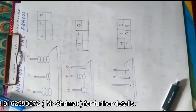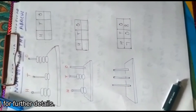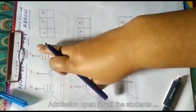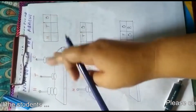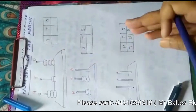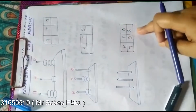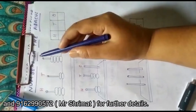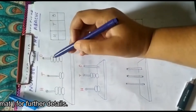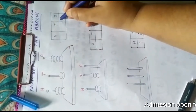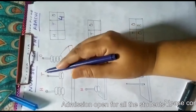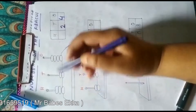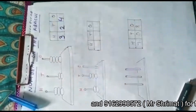Now our topic is numbers on the abacus. Children, there are two types of questions on the abacus. Either beads are drawn on the abacus and you have to write the number for the respective places, or the place value chart is given and you have to draw the beads. In the first method: ones rod has four beads so we write 4, tens rod has two beads so we write 2, hundreds rod has three beads so we write 3. That is the first method.